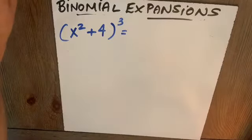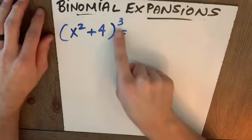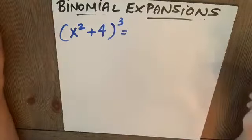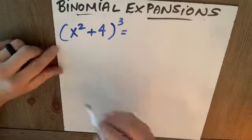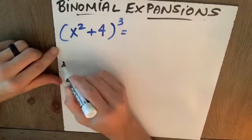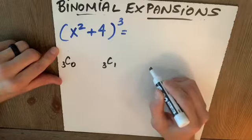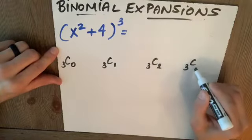If you're asked to expand x squared plus 4 to the third power, note n is 3. So if I add 1 to that, I know I'm going to have 4 terms. And the binomial coefficients will be 3C0, 3C1, 3C2, 3C3.